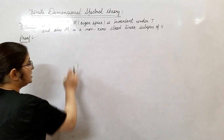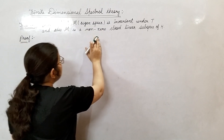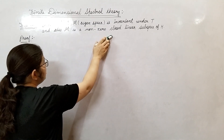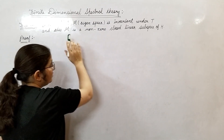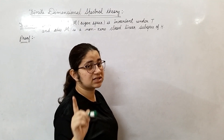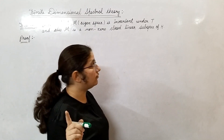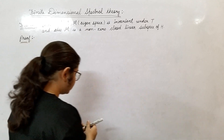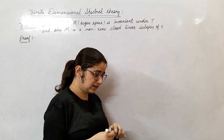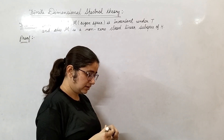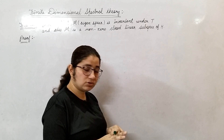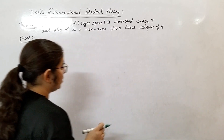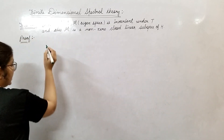So this means M is non-zero, and we need to show that M is invariant under T and M is a closed linear subspace of Hilbert space H. M is invariant under T. Firstly, we will show M is a closed linear subspace of Hilbert space H.